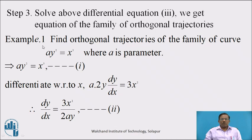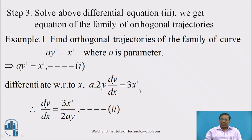Example 1: Find the orthogonal trajectories of the family of curves ay² = x³, where a is a parameter. Solution: denote the given equation ay² = x³ as equation 1. Differentiate with respect to x: a · 2y · dy/dx = 3x². From this, dy/dx = 3x²/(2ay), denoted as equation 2. Now eliminate parameter a between equations 1 and 2: from equation 1, a = x³/y².